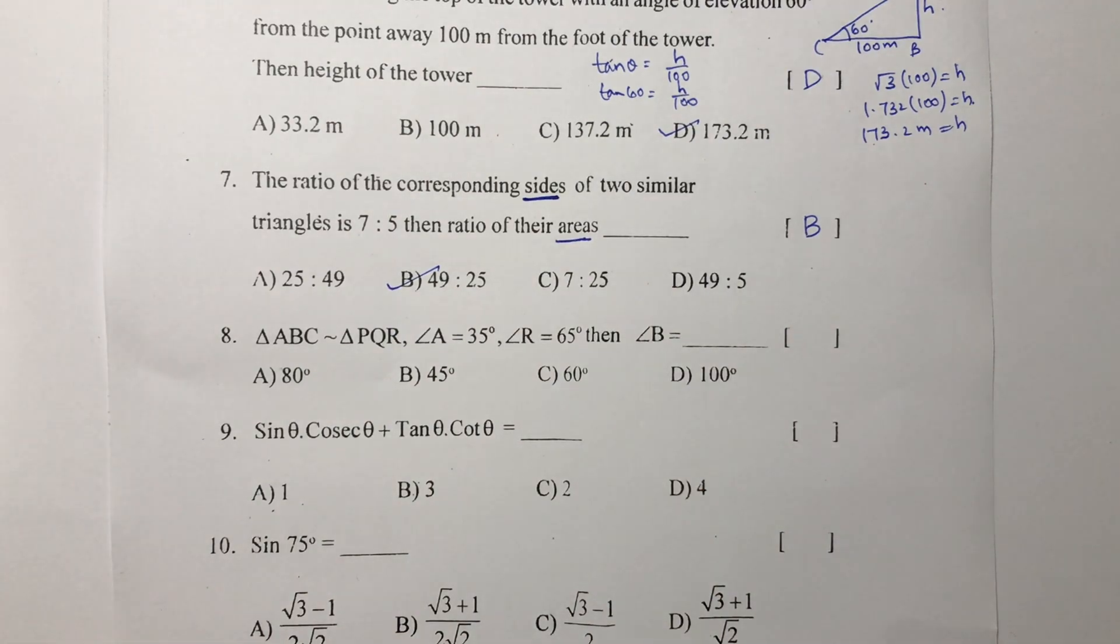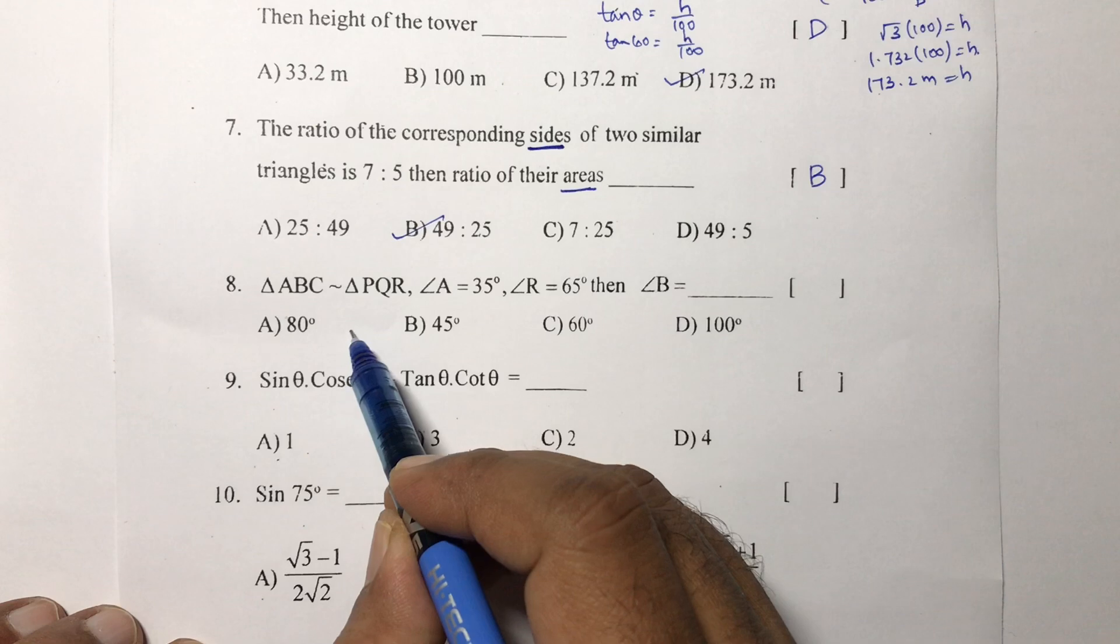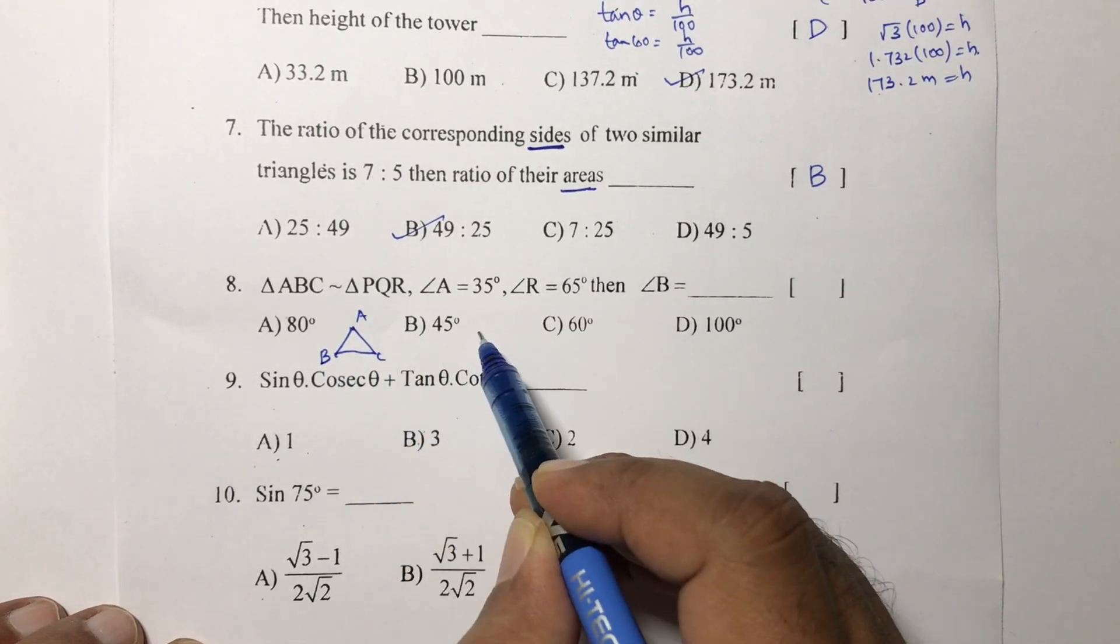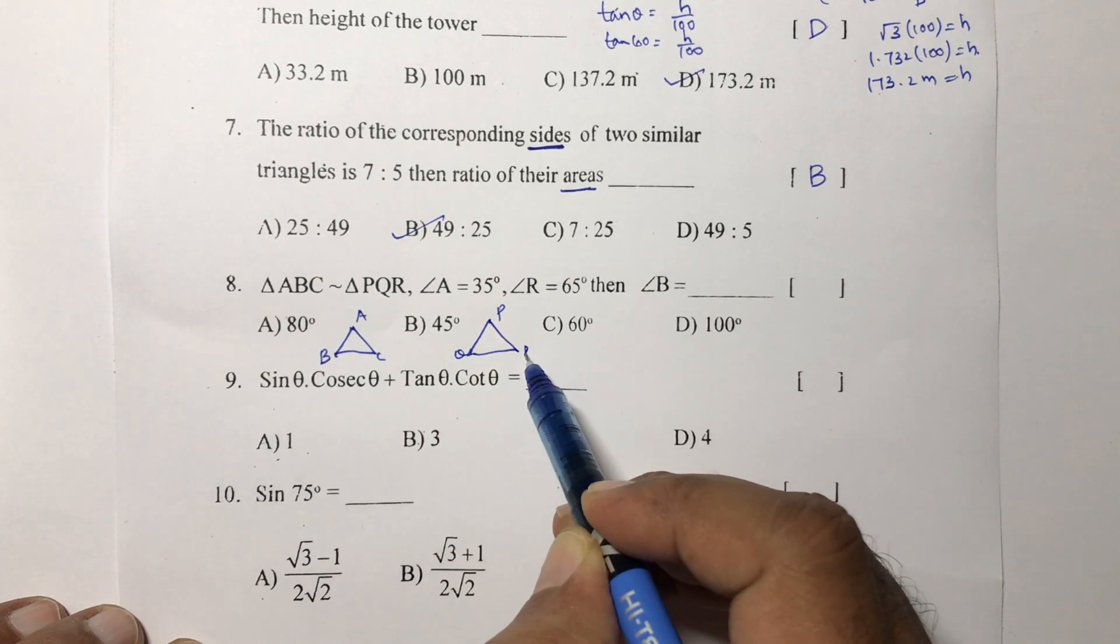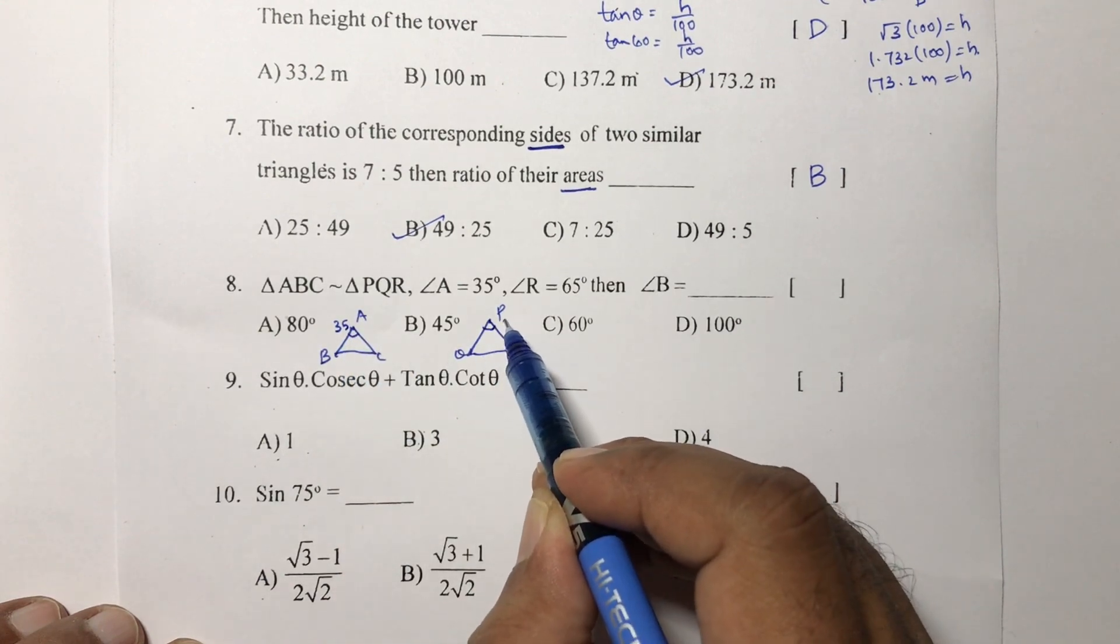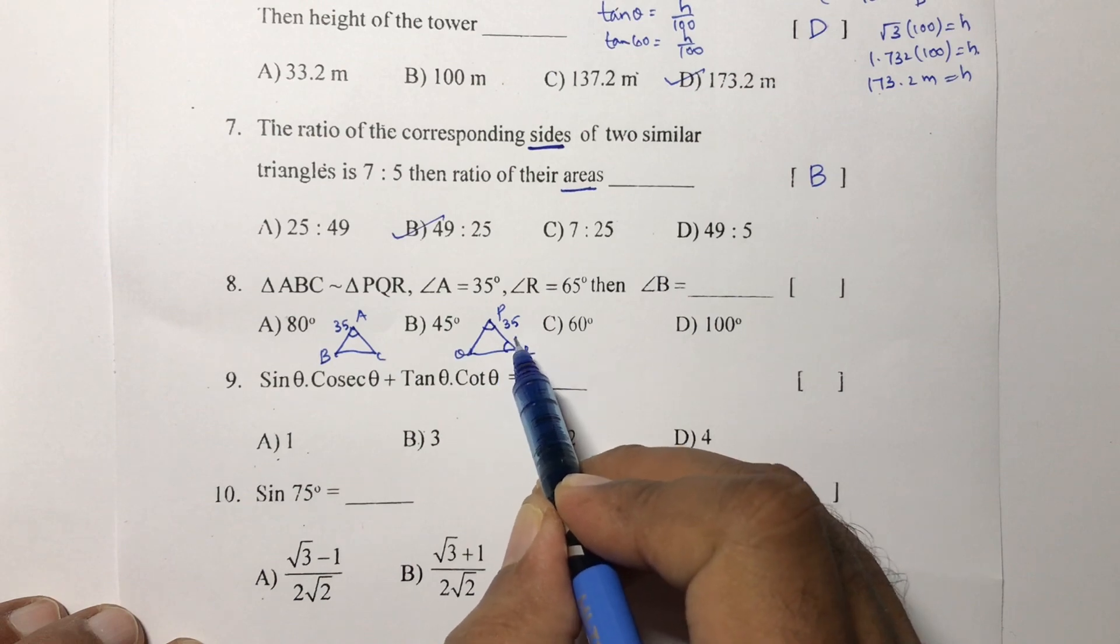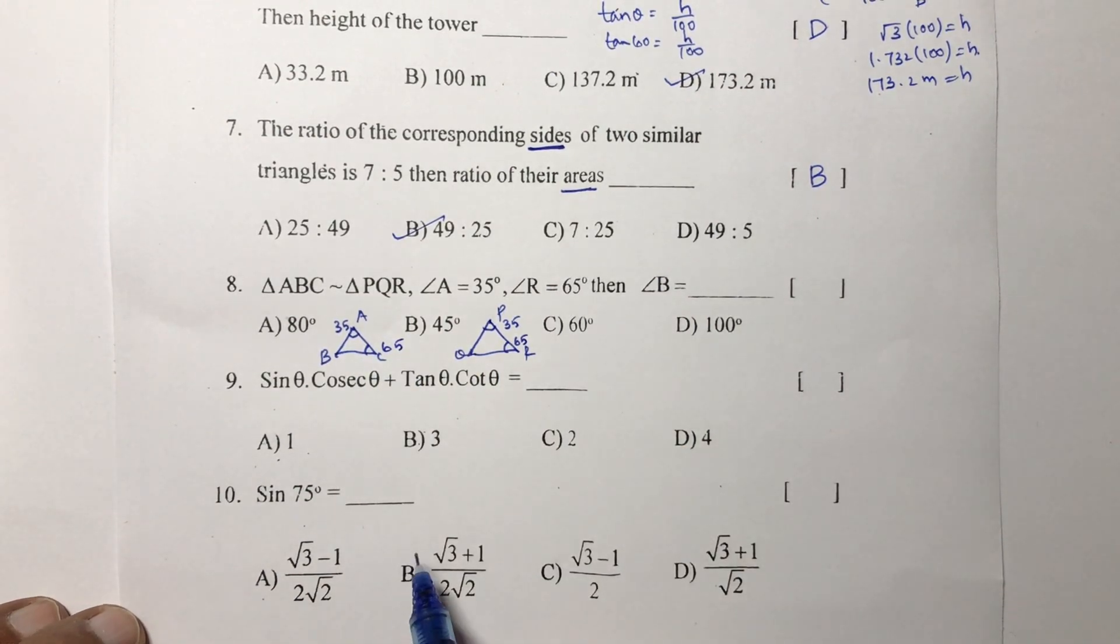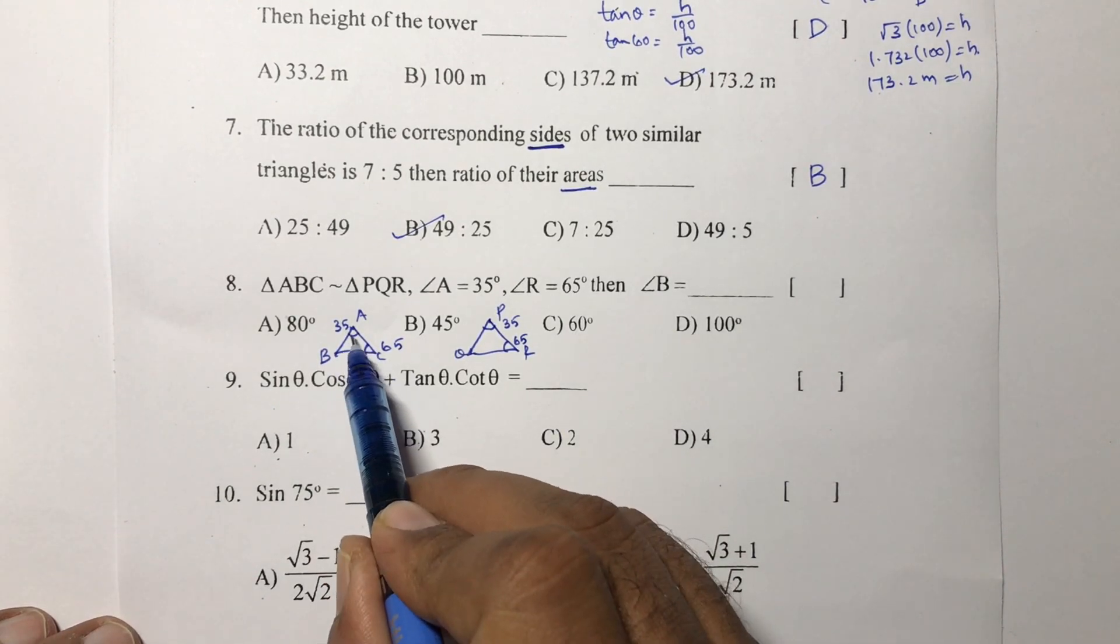Next, triangle ABC is similar to triangle PQR. If angle A is 35, C also will be 35, so P also will be 35. If R is 65, C also will be 65 because corresponding angles will be equal. They are asking angle B. In ABC you got two angles, one is 35, the other is 65.